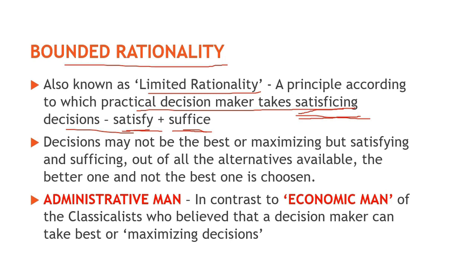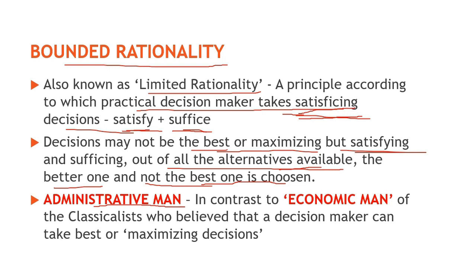Bounded rationality model ke anusaar, ek decision maker sirf ek satisficing ya santoshjanak decision hi le pata hai, na ki ek best decision. Decisions may not be the best or maximizing but satisficing. Out of all the alternatives available, the better one and not the best one is chosen. Herbert Simon gave the concept of administrative man in contrast to the economic man concept of the classicalists, who believe that a decision maker can take best or maximizing decisions.